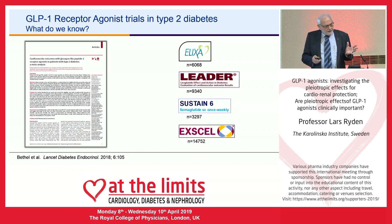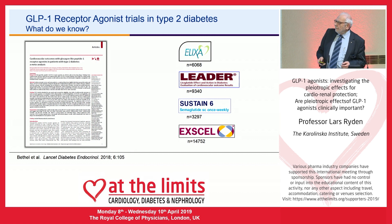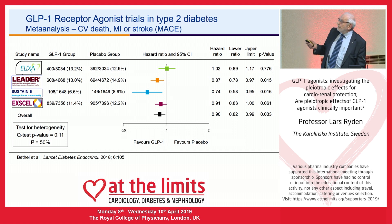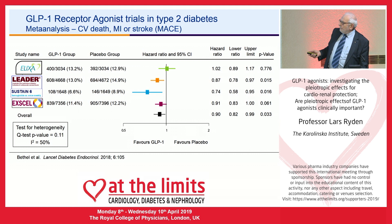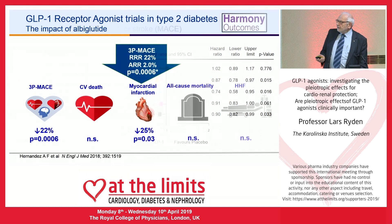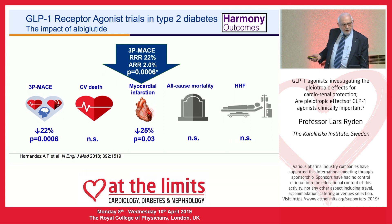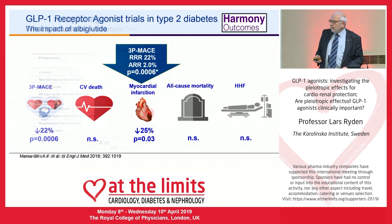To understand what GLP-1 agonists do, we can look at a meta-analysis of major trials. There is a reduction of MACE — a combination of many adverse outcomes — and almost all of the individual agents show a beneficial impact. Albiglutide has since also presented data. Myocardial infarction is better protected by this particular GLP-1 receptor agonist than any other, and that should be kept in mind.